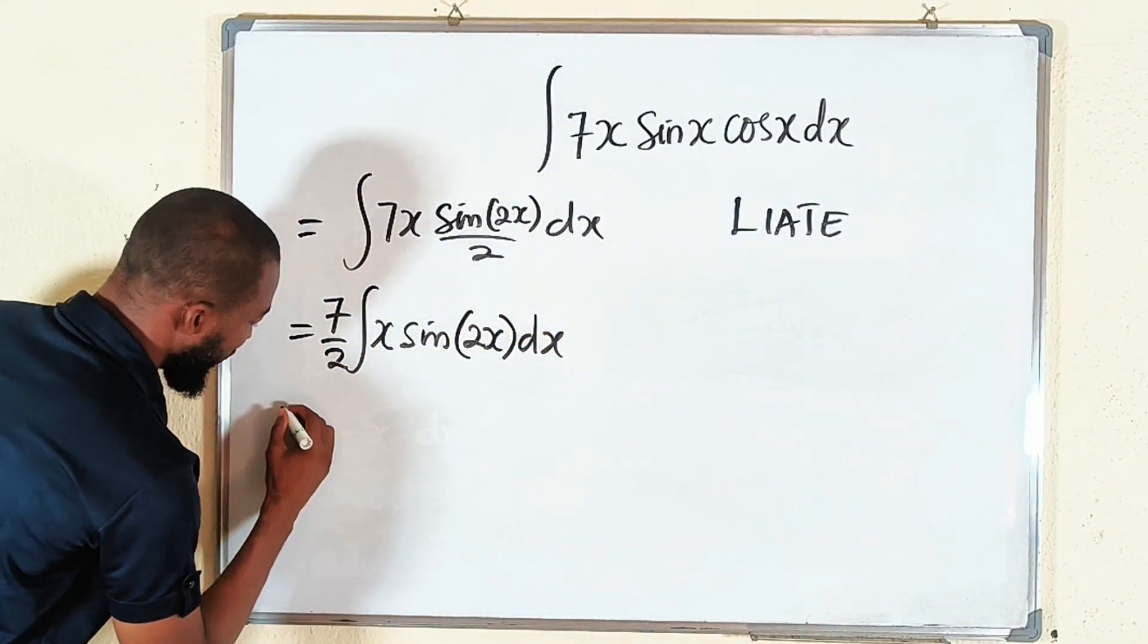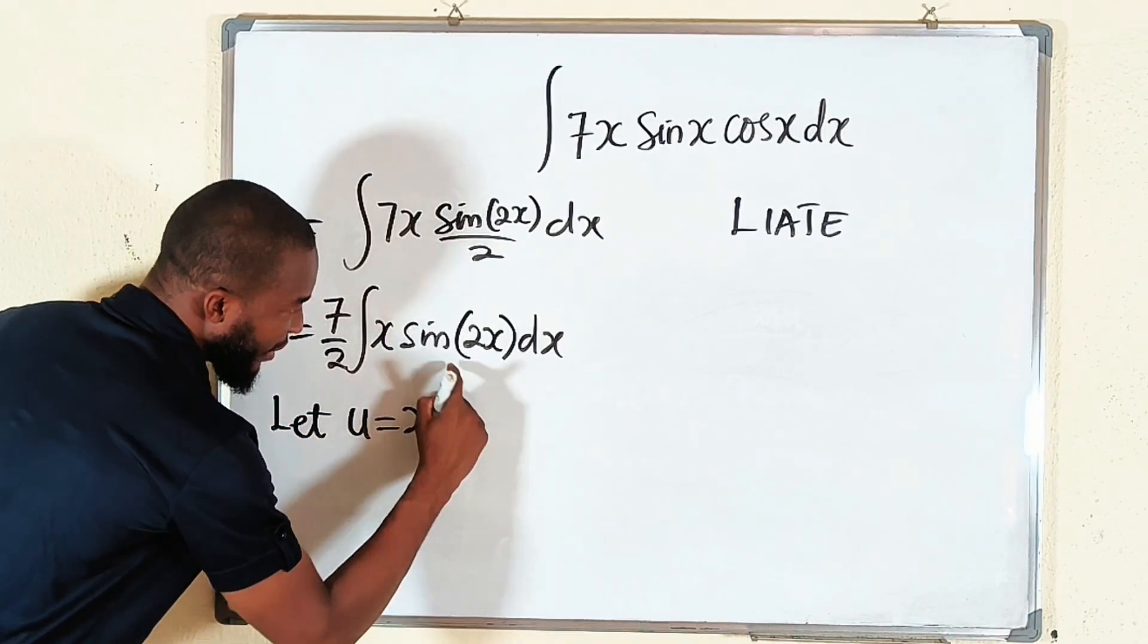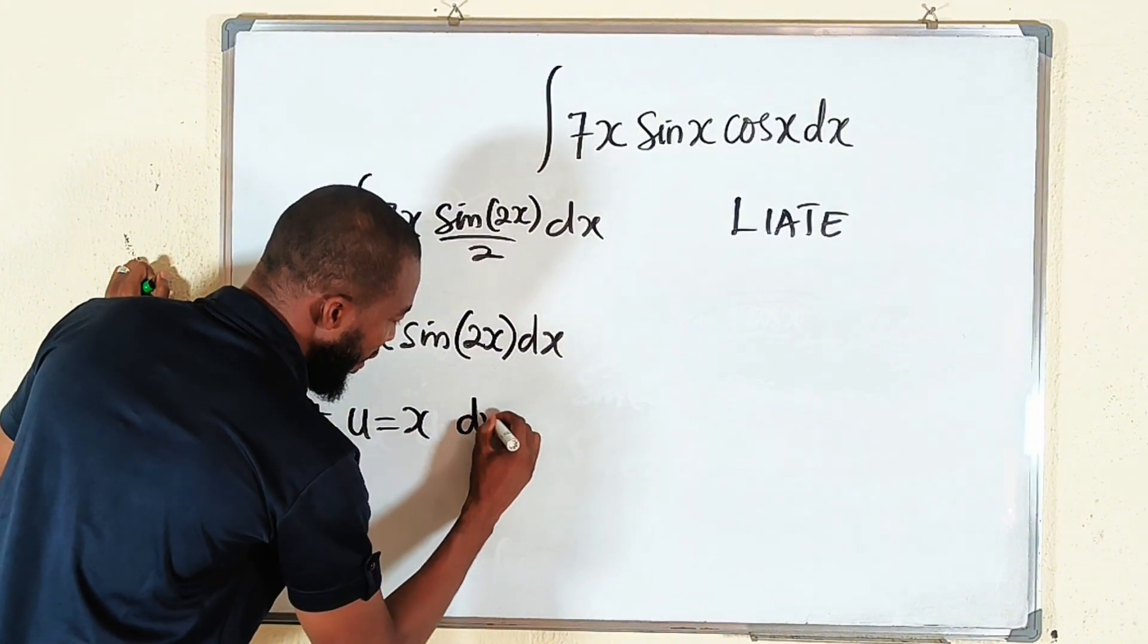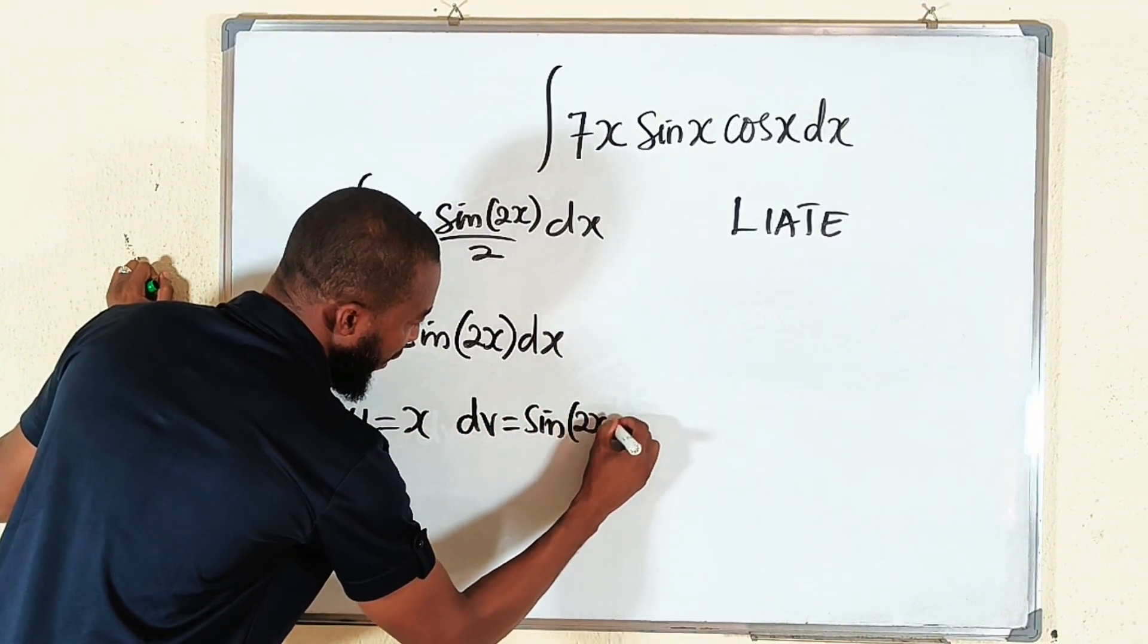So we use x. Let u be equal to x. Then the other function should be our dv, and dv equals sin of 2x dx.